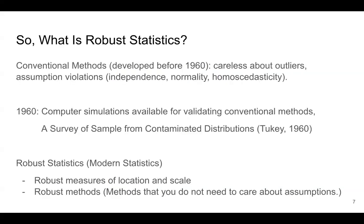So what is robust statistics? Well, before we jump into robust statistics, we need to talk about conventional statistics, conventional methods first, the methods developed before 1960. Well, they are careless about outliers and also assumption violations. And there are three most common assumptions: independence, normality and homoscedasticity. And normality and homoscedasticity assumptions are almost always never met, unless your sample is from a controlled simulation environment.